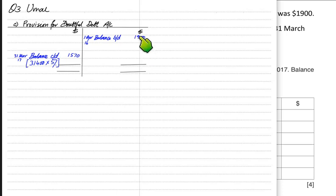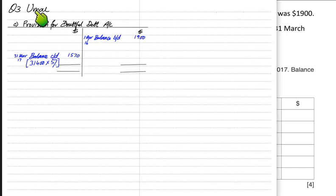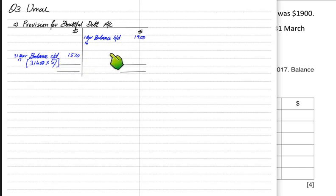At the start of the year we had a provision of 1,900 but this provision has been reduced to 1,570. If the provision is decreasing during the year, it is basically good news for the business. We need to calculate the difference between the two and this difference needs to be transferred to the income statement.